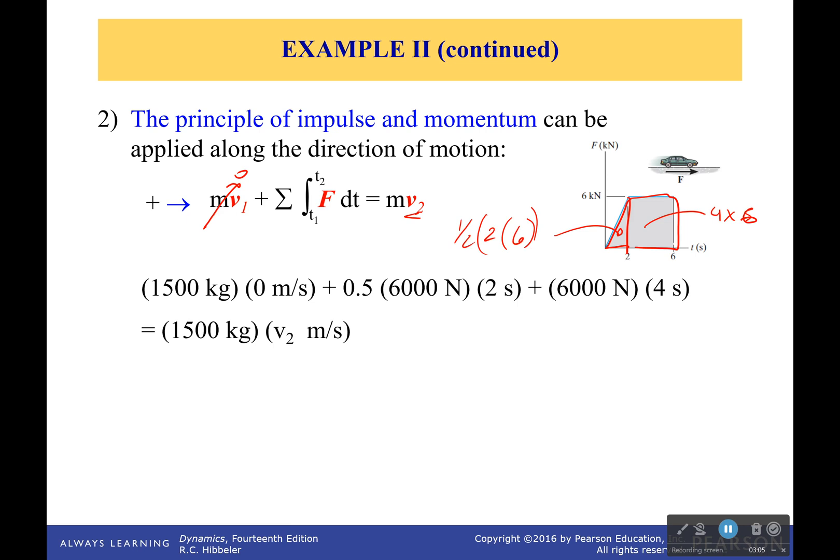Okay, so that's looking pretty good there. There's the one half 6 times 2, there's the 6 times 4 right there. And what we get is our initial momentum is zero and we can finally then solve for our final velocity, which will come out to be 20 meters per second.